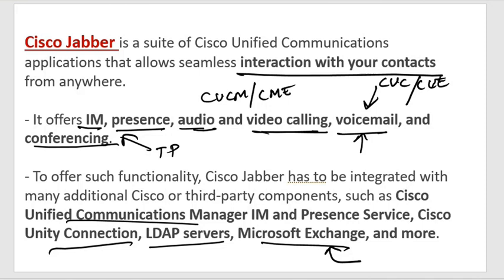Exchange is used to get calendar information. If you have any meetings in your Outlook, Jabber can show what meetings you have, and at that point it will automatically show your status as busy — similar to how you see it in Teams. So Exchange is used for calendar information.